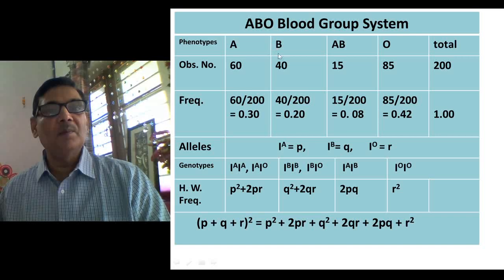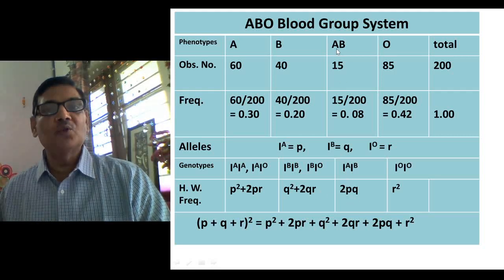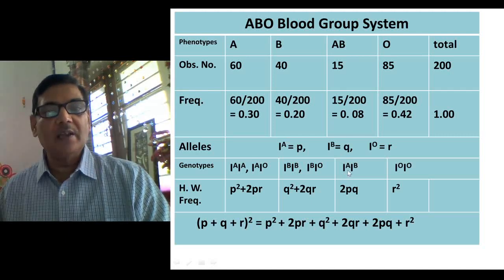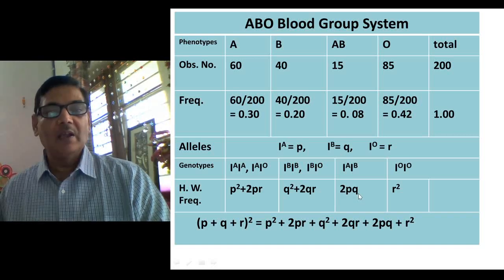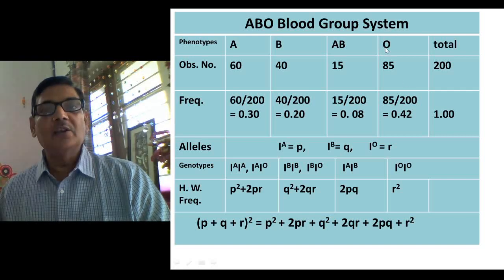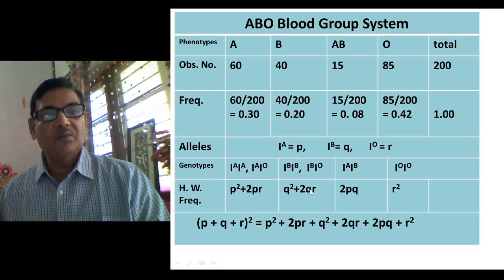Individuals with blood group B — genotypically IBIB — are represented by Q², and heterozygous IBIO individuals by 2QR. Individuals with blood group AB, genotypically IAIB, are represented by 2PQ, since P stands for IA and Q for IB. Individuals with blood group O, genotypically IOIO, are represented by R². All six different genotypes are thus represented by these frequency terms.